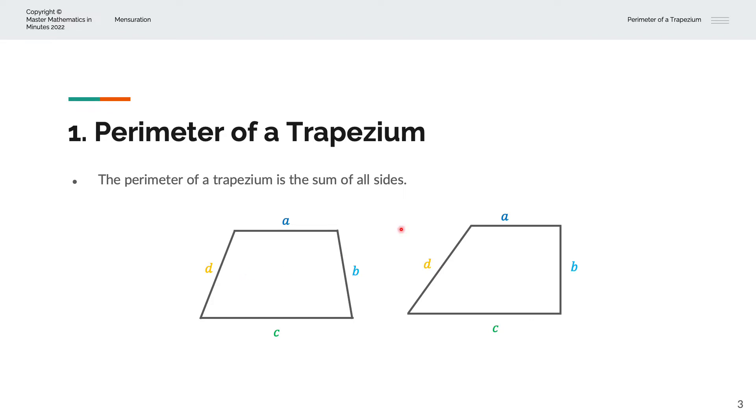In the second example, we have another trapezium with sides A, B, C and D. So the perimeter, P, is given by A plus B plus C plus D.